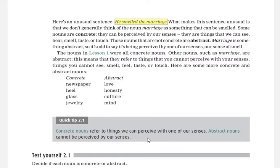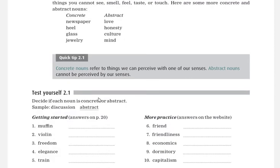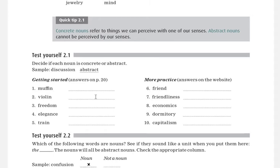Test yourself 2.1: You have to write whether it is a concrete noun or an abstract noun. Words like muffin, violin, freedom are here, and you can write concrete or abstract.